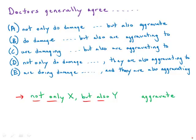So in answer choice A, we have the complete idiom, not only, but also. In B, we have the but also, but not the not only. C, we have but also, but not only.